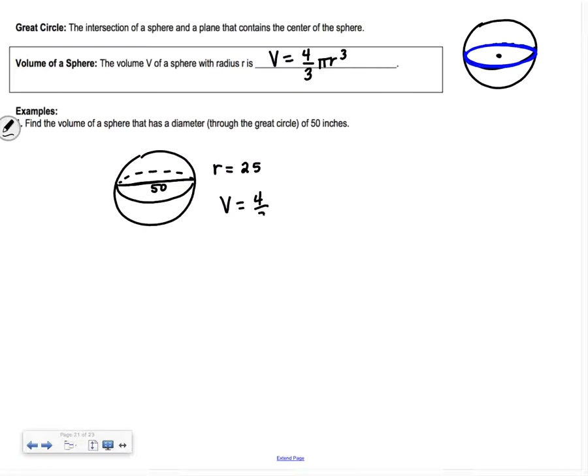Our volume is 4/3 π times 25 cubed. If you put 25 cubed into your calculator, you get 15,625. We can't divide that by 3, so I would just multiply by 4 and write it as over 3. We get 62,500/3 π.